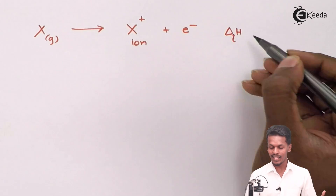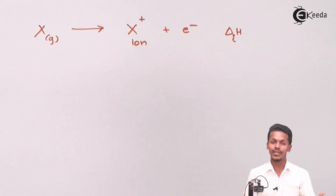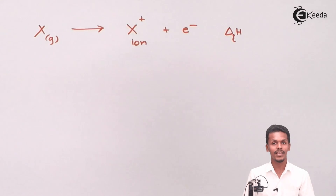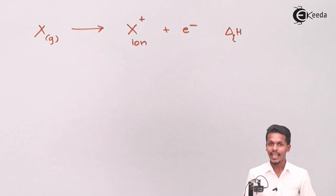This energy is denoted by delta H of I. It is known as ionization enthalpy, as well as ionization potential or ionization energy.